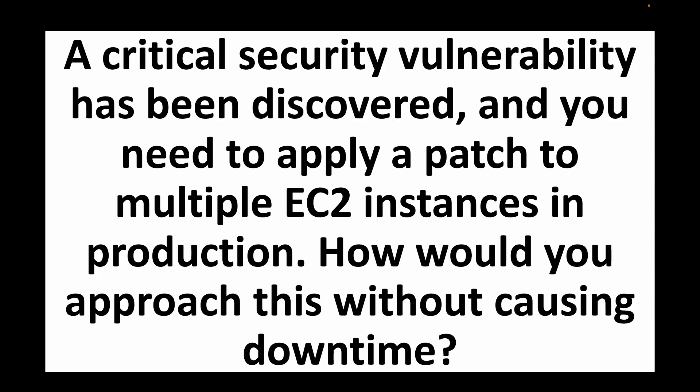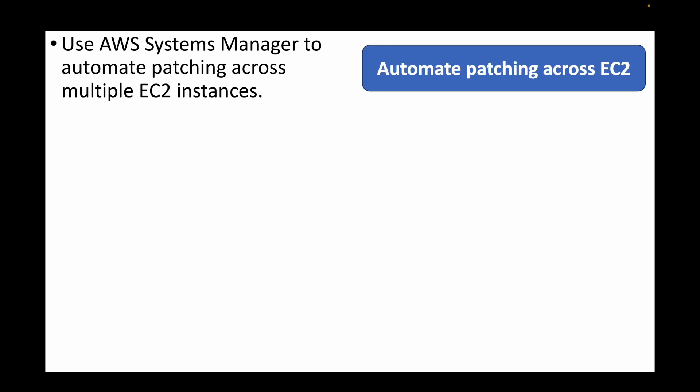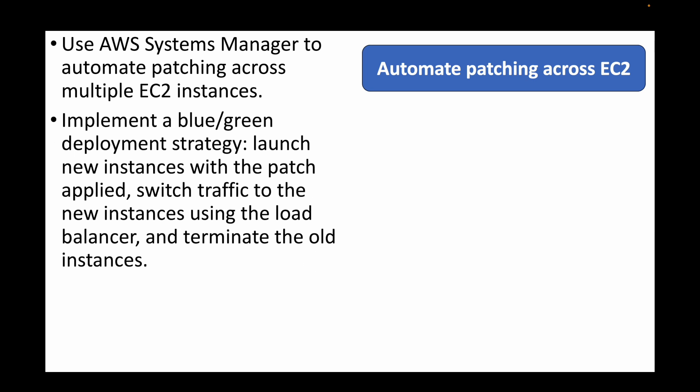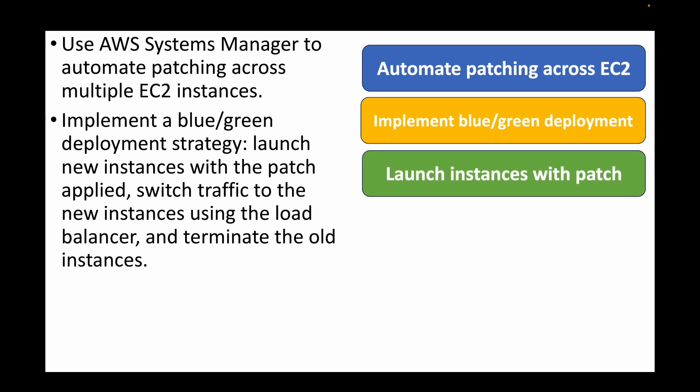The next question: a critical security vulnerability has been discovered and you need to apply a patch to multiple EC2 instances in production — how would you approach this without causing downtime? We can make use of Systems Manager to automate patching multiple EC2 instances using SSM documents. We can also implement a blue-green deployment strategy, launching new instances with the patch applied, then switching traffic to the new instances using a load balancer or Route 53.